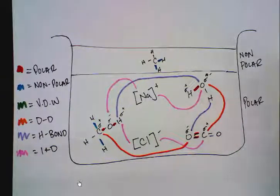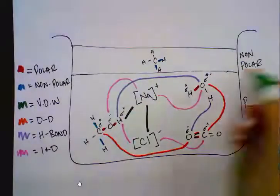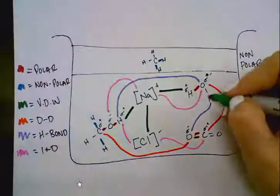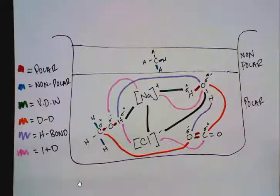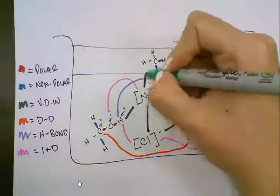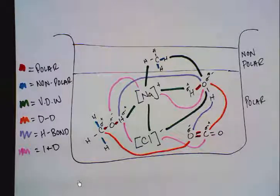Last one is van der Waals which is the easiest of all of them. This goes in between any and all molecules. You probably want to leave this one to the end because you can see I'm being a little strategic in filling up some of the space. It also can happen in between layers. This is the only attraction that's going to cross that polar non-polar line.